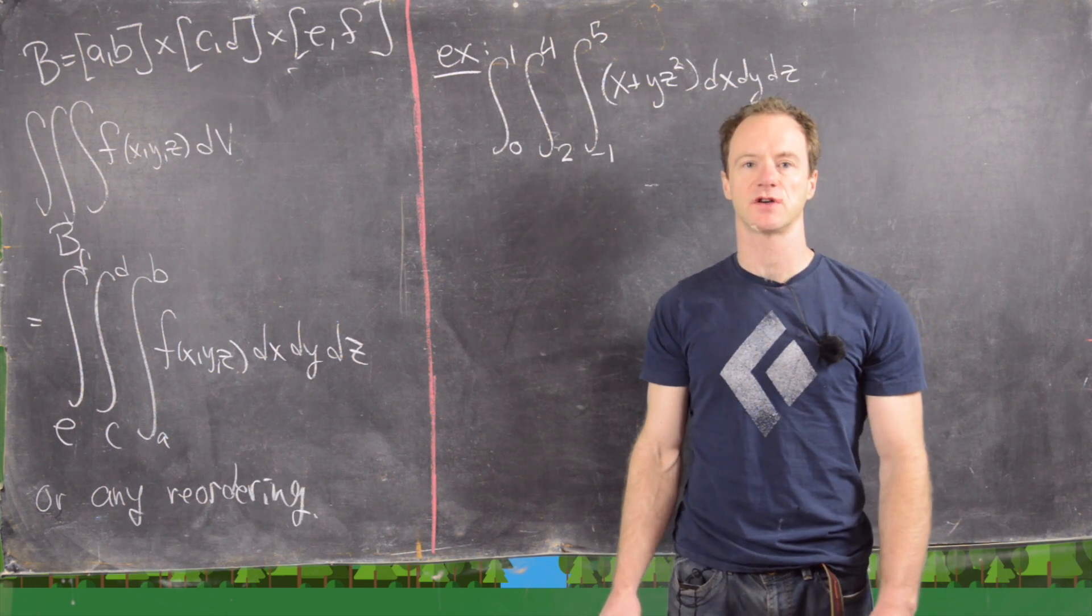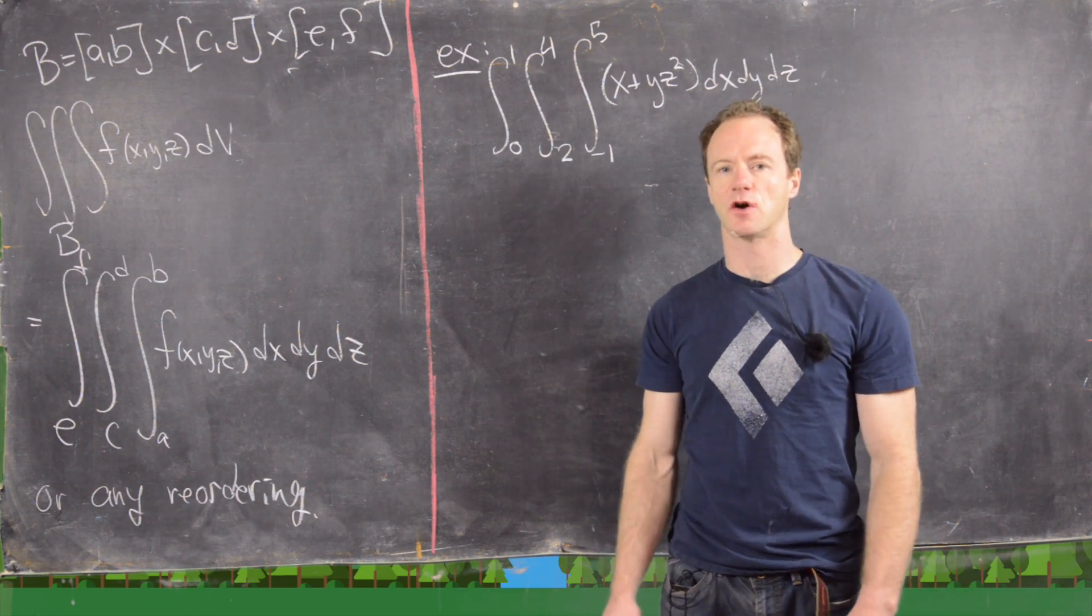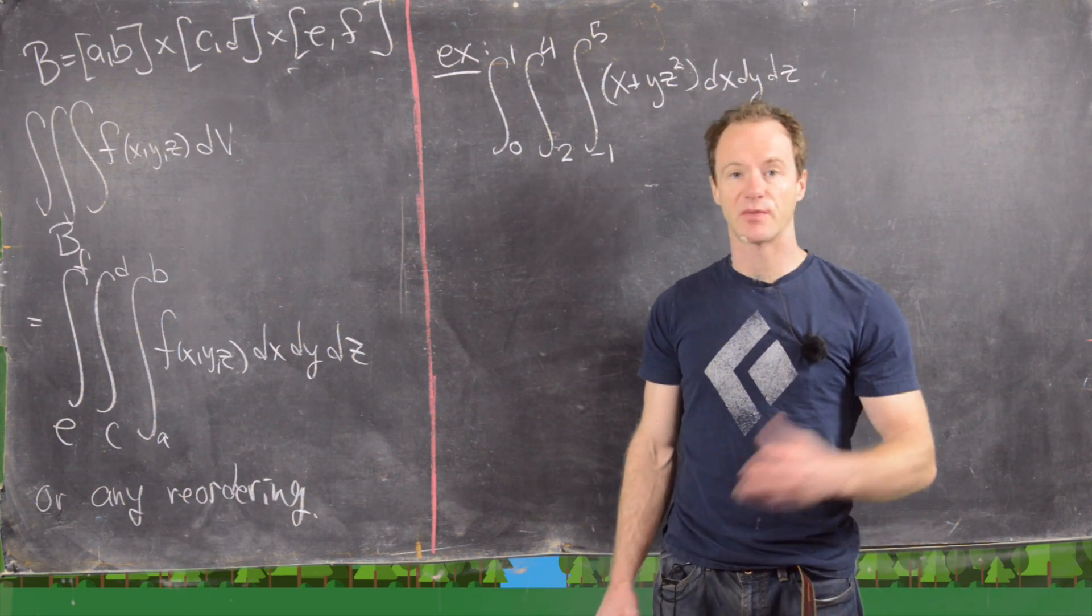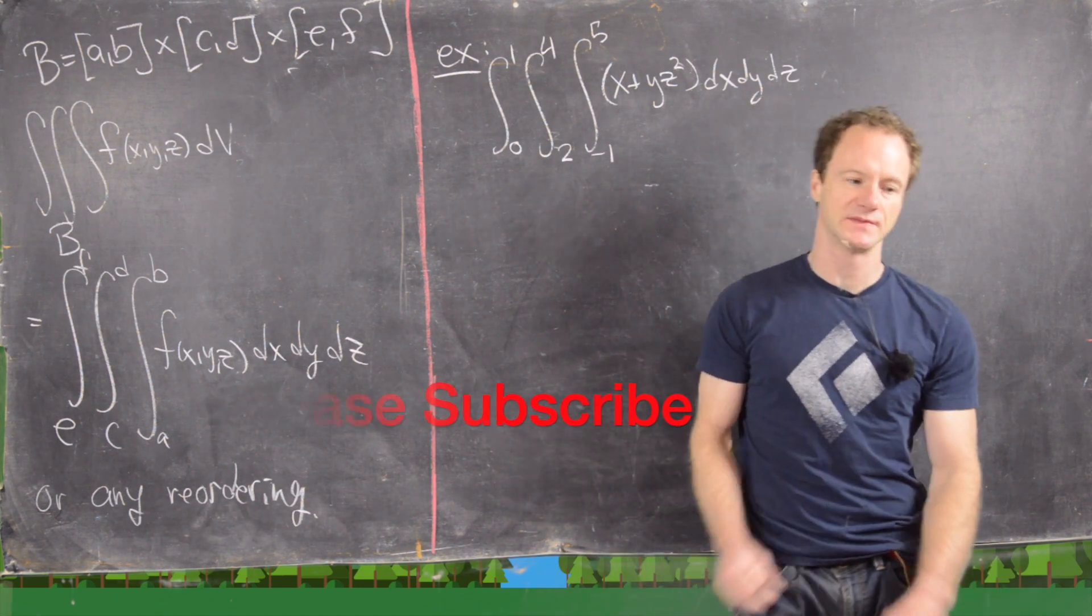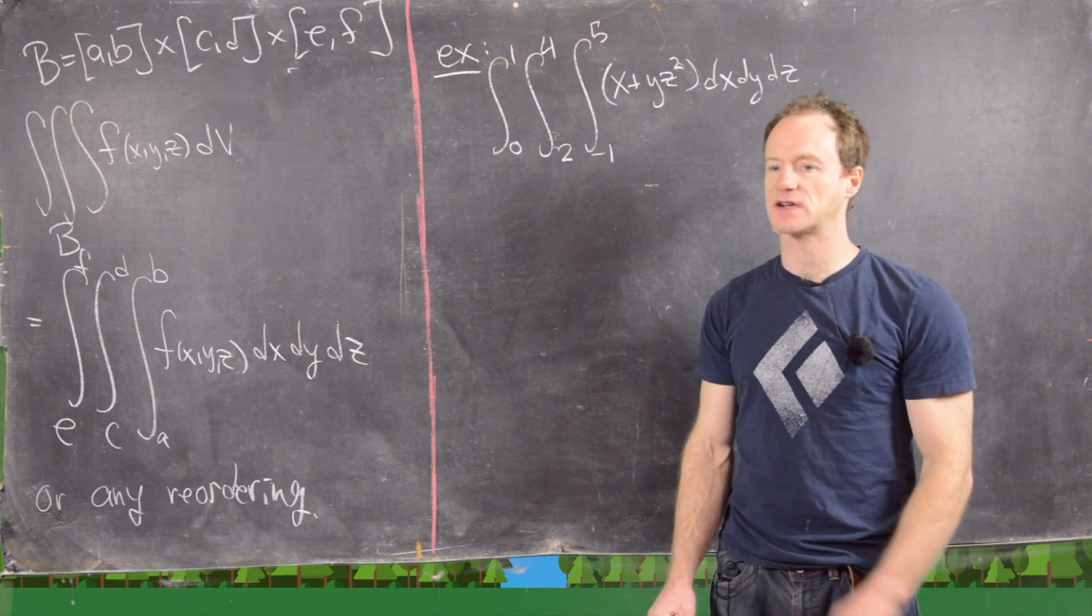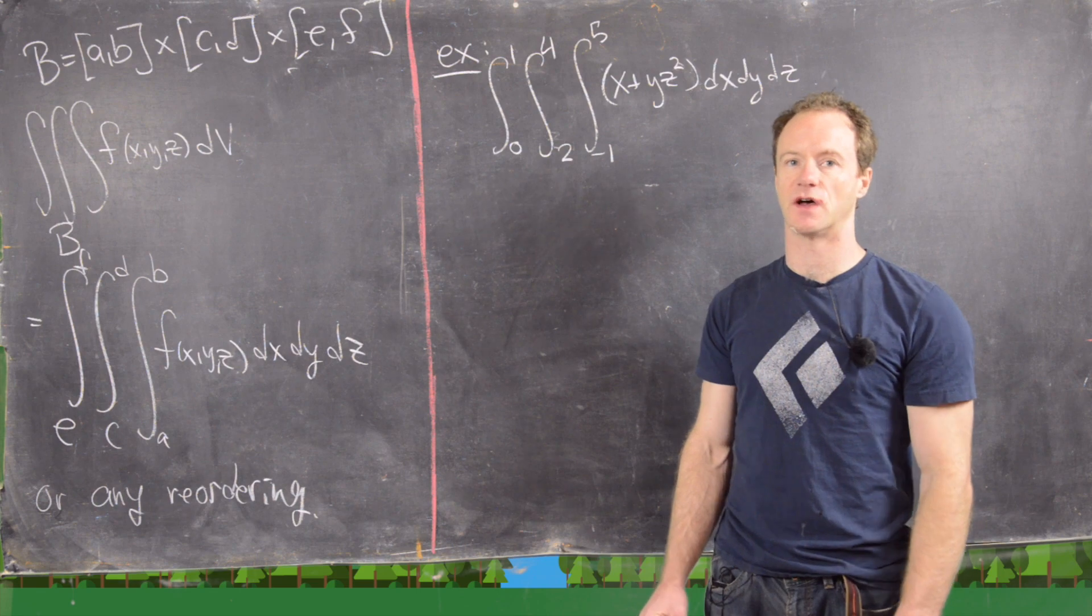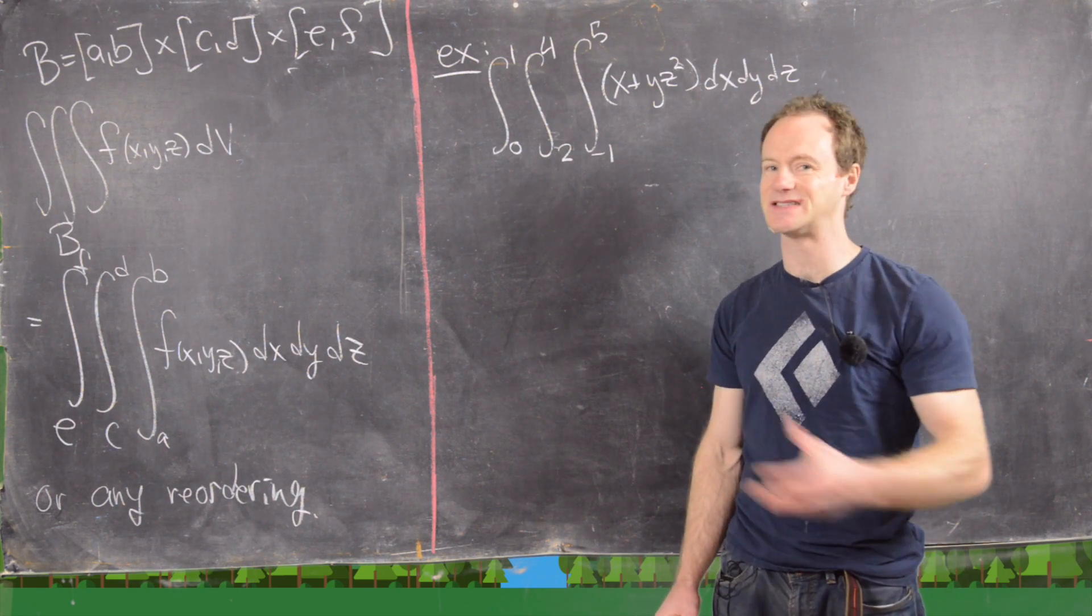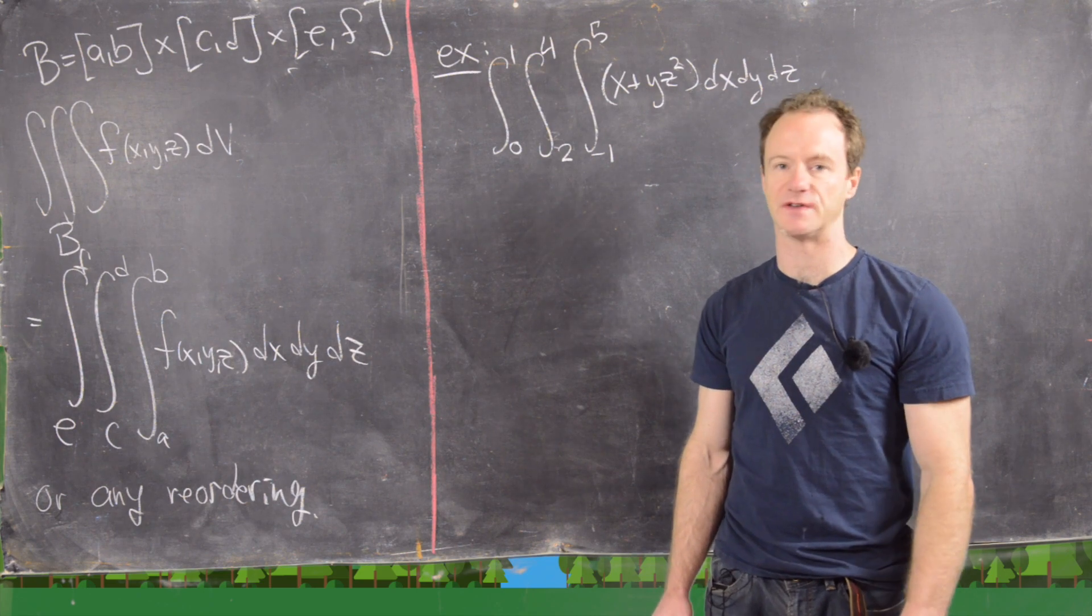In this video we're going to look at triple integrals over rectangular boxes. We did double integrals over rectangles in a previous video and we carefully constructed them via Riemann sums, and you can do the exact same thing with triple integrals over rectangular boxes, but I'll let you look up in your textbook or whatever other resource you're looking at for that because it's essentially the same kind of thing and it all boils down to taking a bunch of integrals in a row.